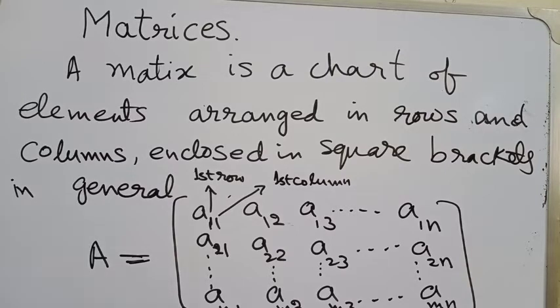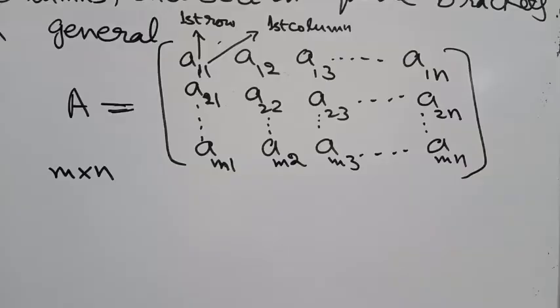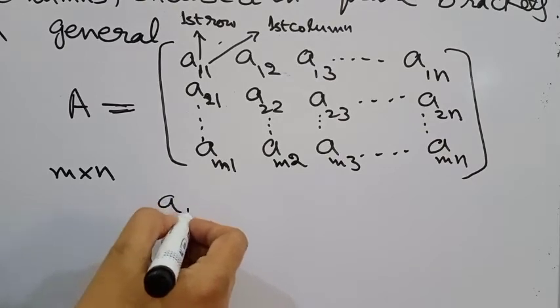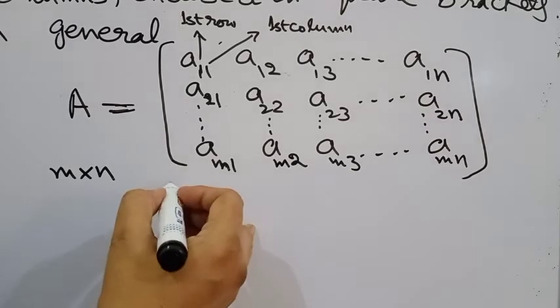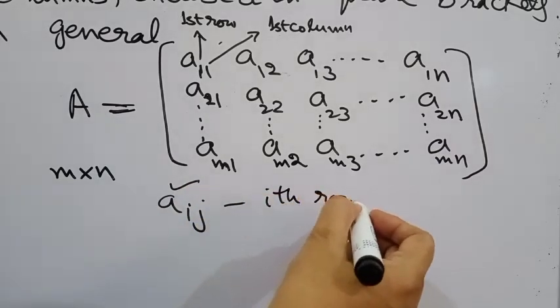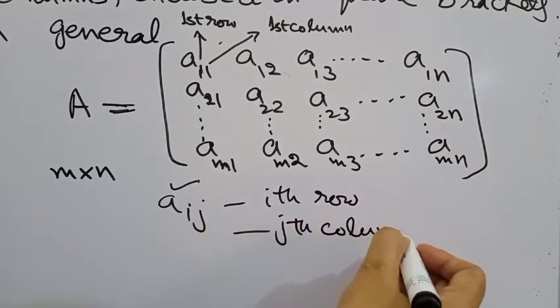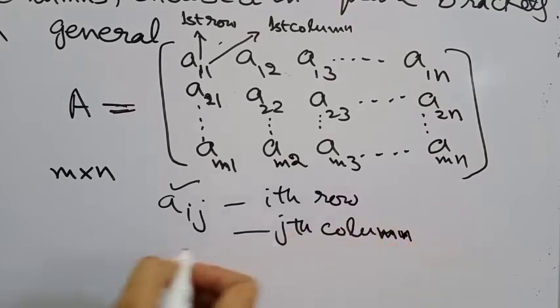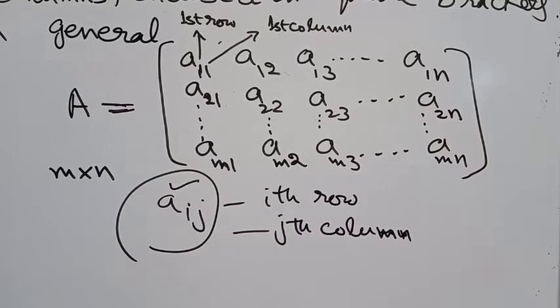An entry Aij means that element A lies in ith row and jth column. This is in general - we say that Aij is an element A lie in ith row and jth column of this matrix.